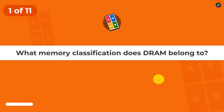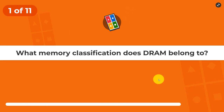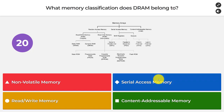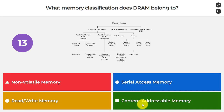In this Kahoot we'll have 11 questions. The first is: what memory classification does DRAM belong to? Non-volatile memory, serial access memory, read-write memory, or content-addressable memory? The answer is read-write memory.